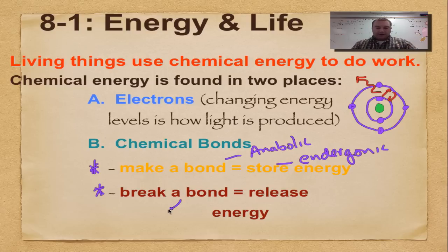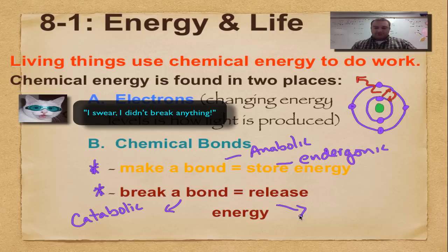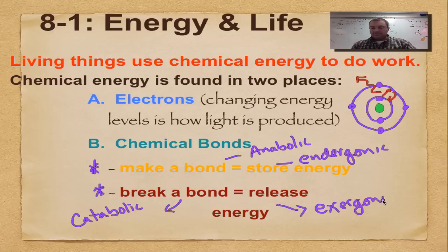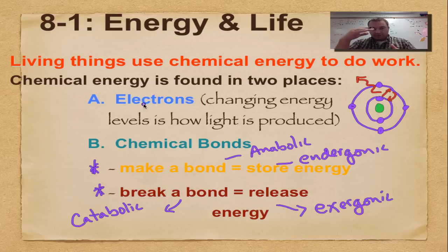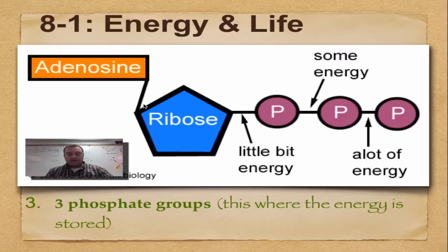When you break a bond, that releases energy. So that is going to be catabolic. Remember the cat breaks and releases. And you can also say that it's exergonic. Exergonic is a word that means energy goes out. So it's all kind of review. Electrons store energy as they go up and down - they either gain energy or emit energy. And chemical bonds: anabolic, catabolic. Just a review of stuff we've had before.